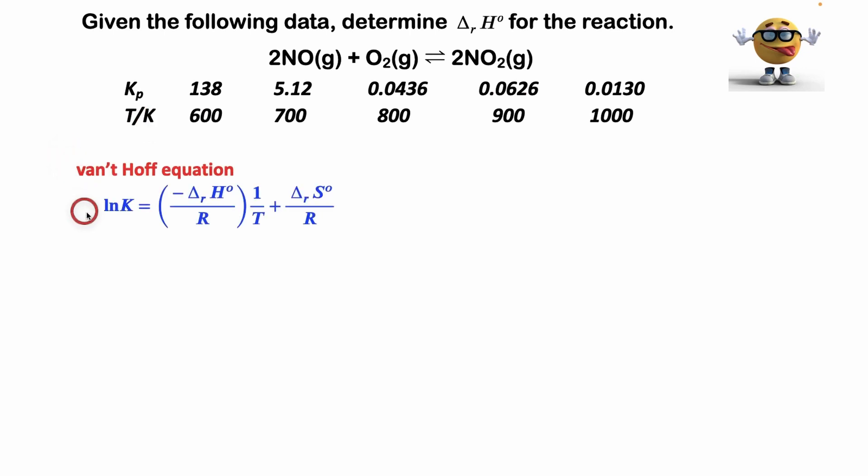The van't Hoff equation in the form we're going to use is this form right here. I've derived this equation in many different ways - you can check those videos out if you like. It might look complicated, but it's very similar to a straight line, y equals mx plus b, where y is ln K, our slope m is everything in the brackets here, x is 1 over T, and this is our y-intercept.